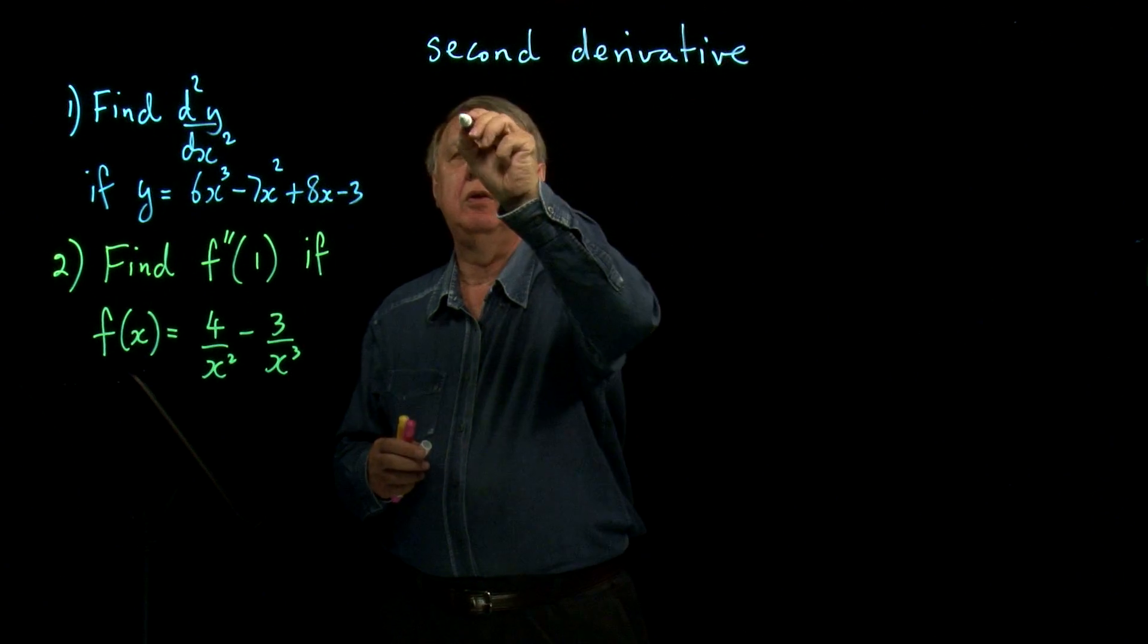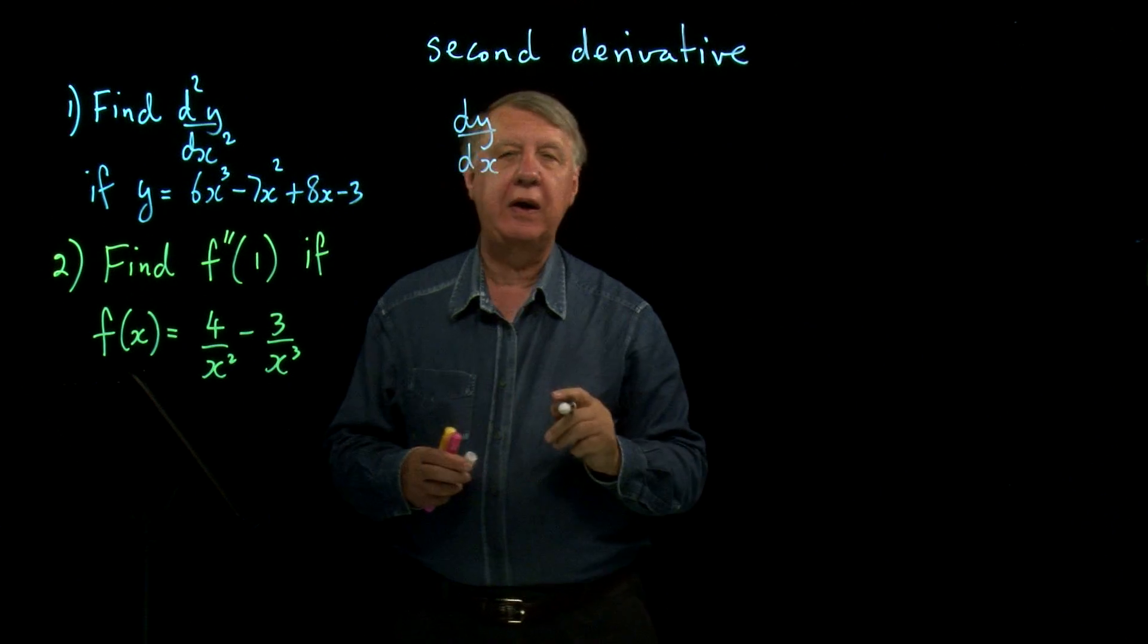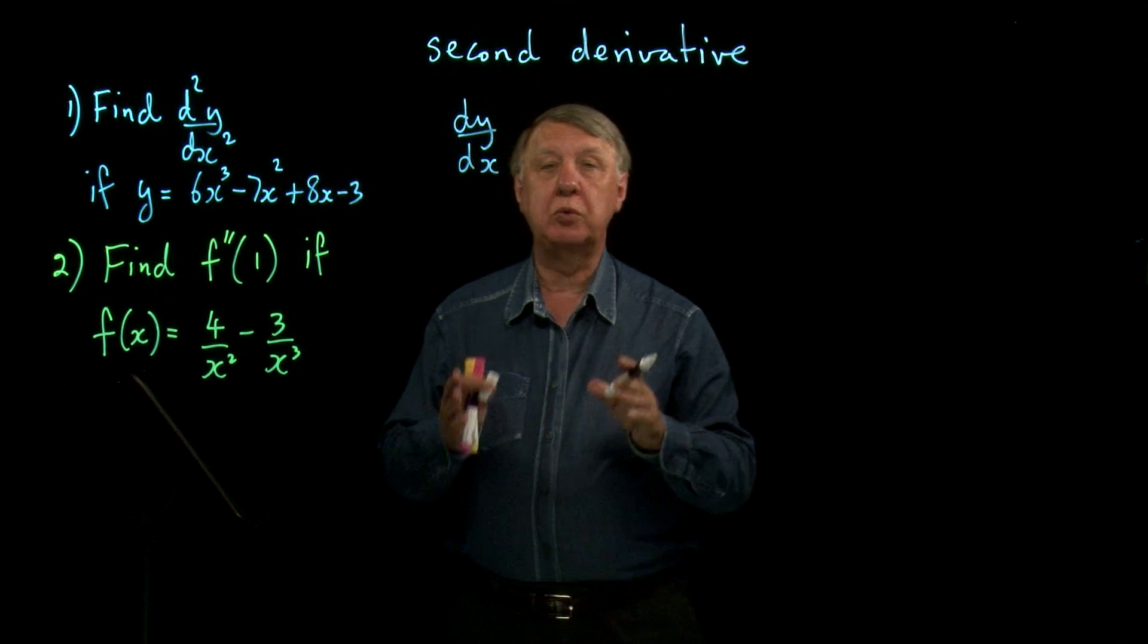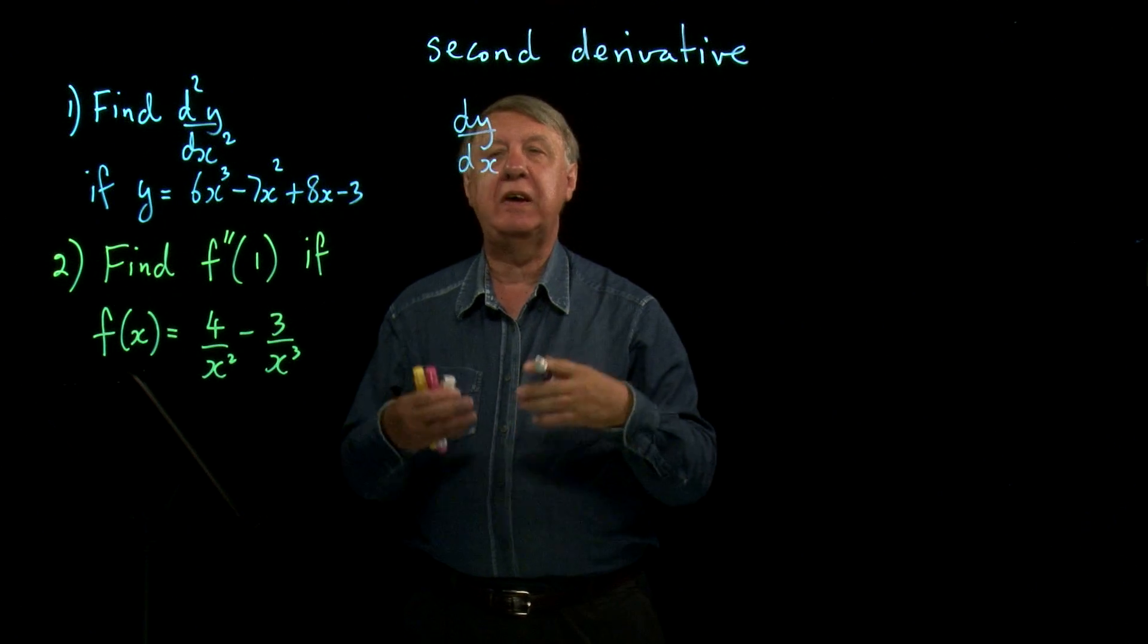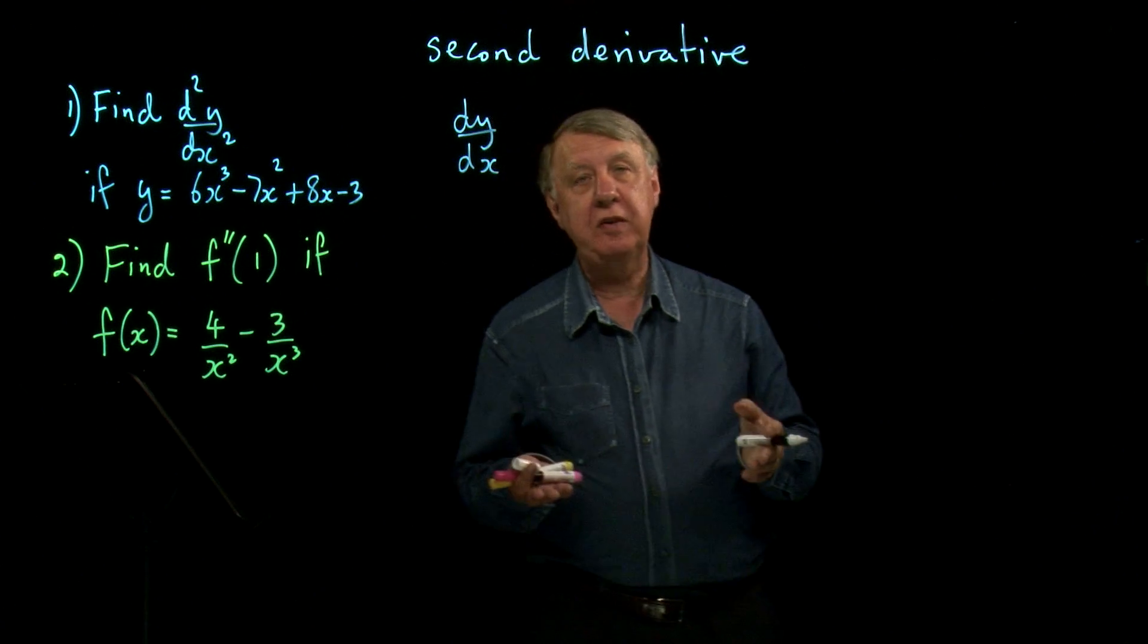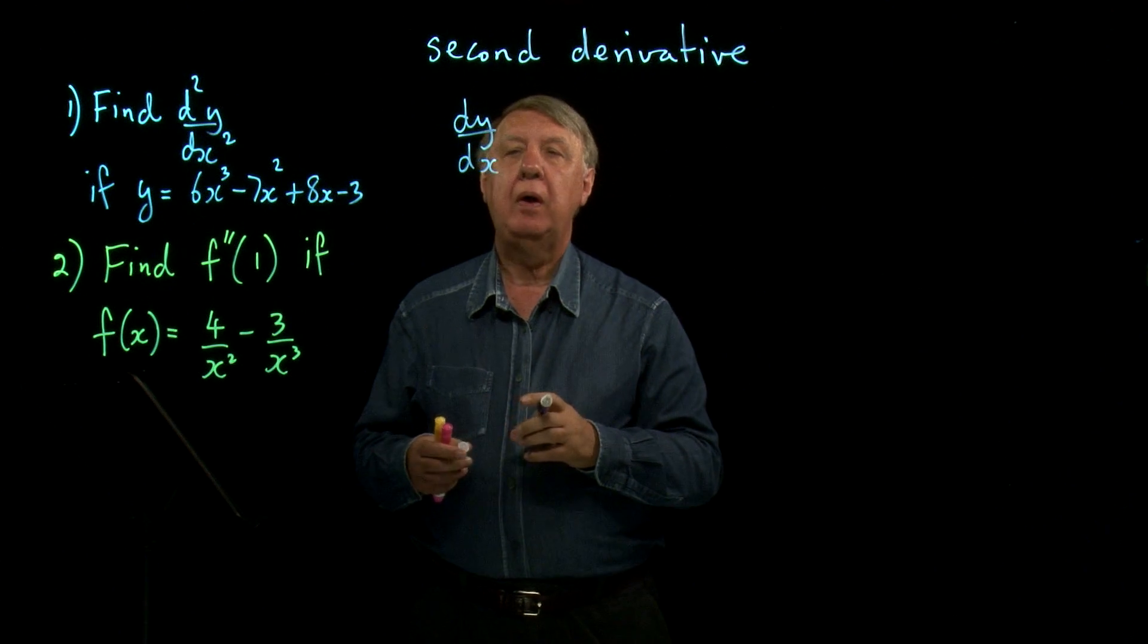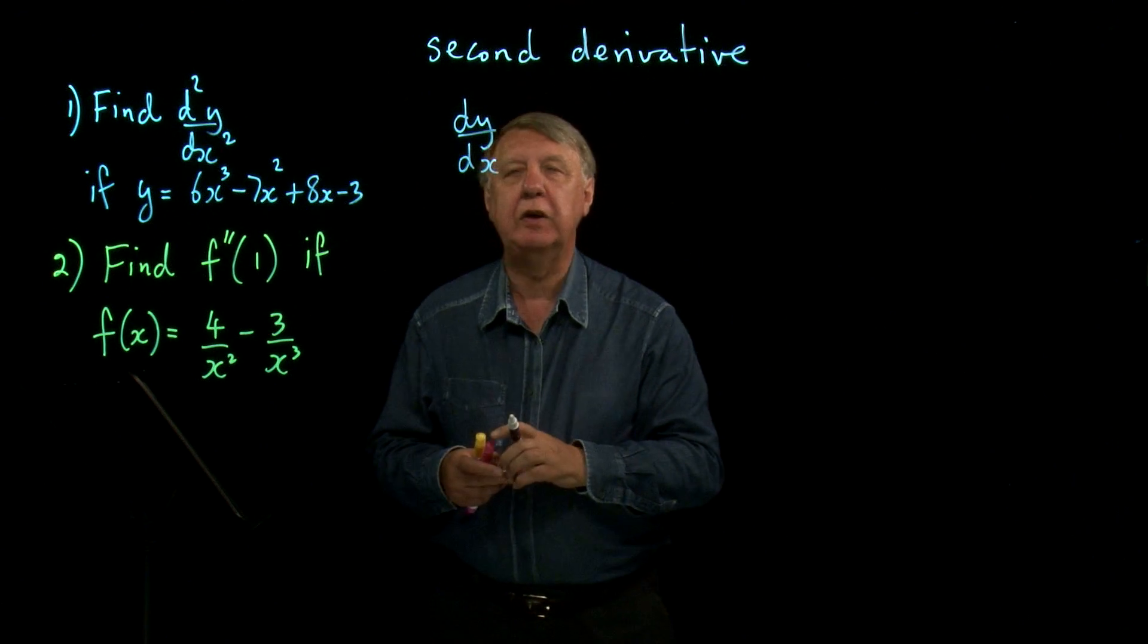Now, we've already looked quite a lot at the meaning of dy by dx. The process of finding dy by dx is called differentiation and the answer that we get is sometimes called the derivative or the gradient function, and it represents the gradient or it gives us the gradient of the curve.